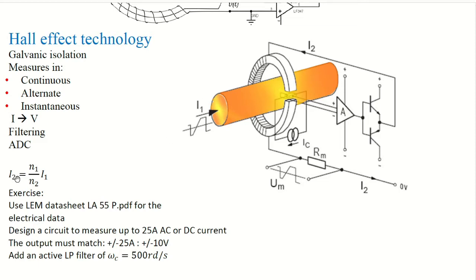So at this point, we have I2 equals to N1 on N2 by I1. So I2 is less, of course, less than I1 by many factors.